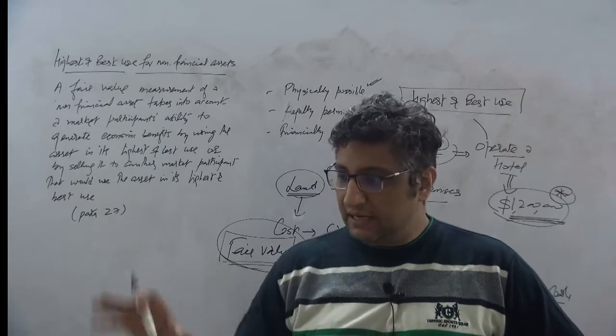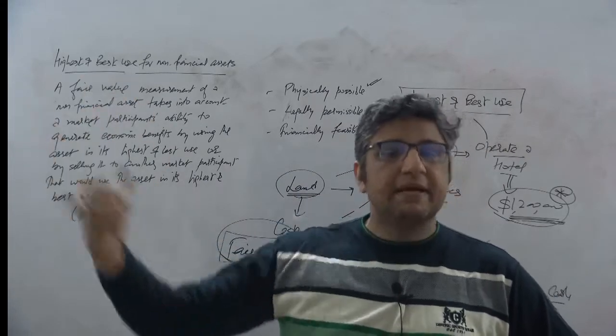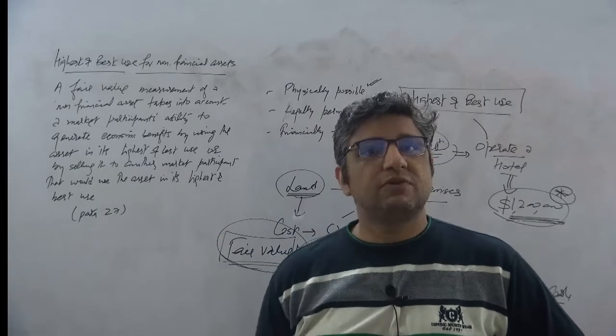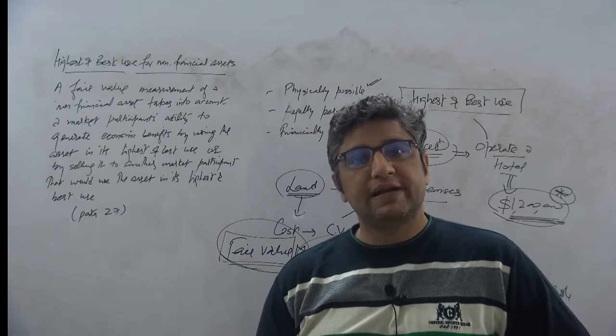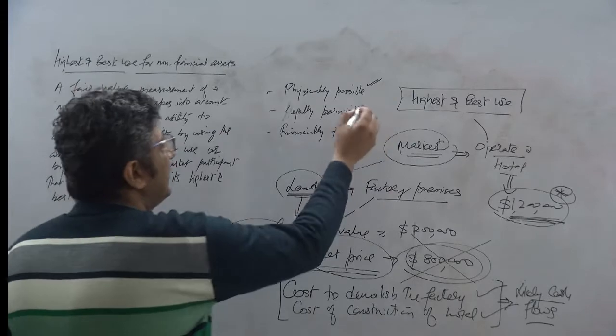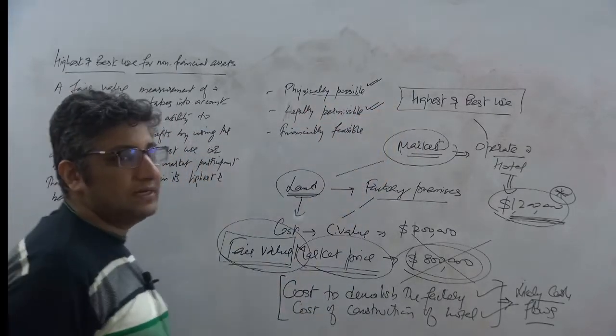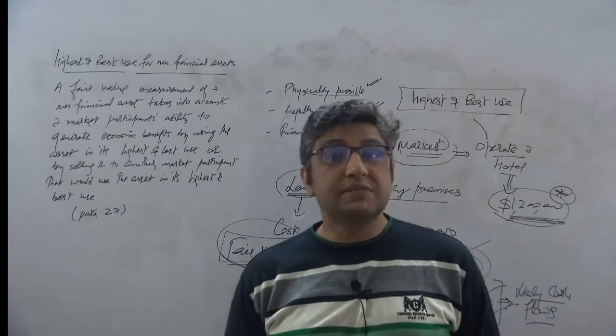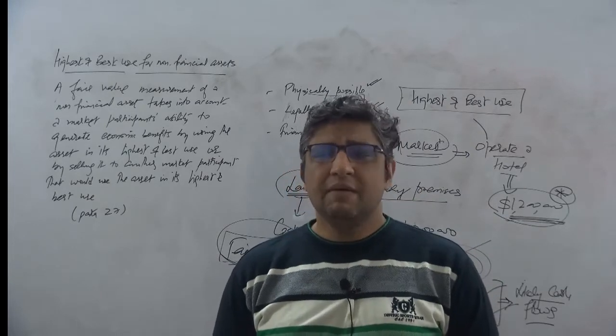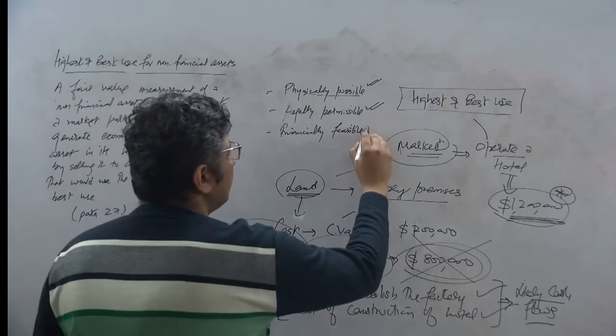But let us say, on that piece of land, right, while physically I might be able to build, let's say, 50 stories or 50 such floors. But legally, I am only allowed to build, let's say, 20 floors. What does it mean now? I don't only factor the physically possible aspect. I also look at what is legally permitted to be. What is legally permissible, all right. You bring all those aspects into consideration. But what you cannot ignore, of course, the financial feasibility of that.